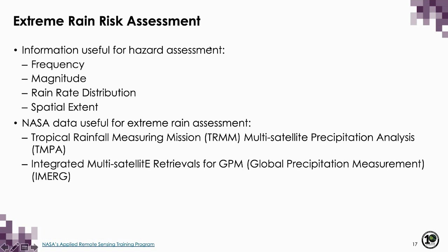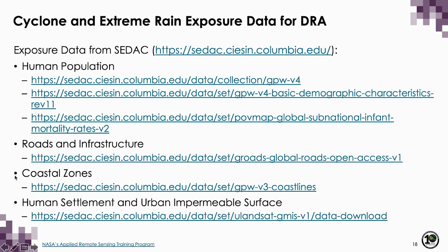The next example will be extreme rain risk assessment using the city of Houston as a case study, which frequently gets flooded because of extreme rainfall or hurricane-related rainfall. Useful information includes frequency of rainfall, intensity, distribution in terms of rain rate per hour or per day, and spatial extent — these can lead to flood risk assessment. We will be using TMPA and IMERG for that. We will also look at exposure data from SEDAC, which includes human population data, roads and infrastructure, coastal zones, human settlement, and urban impermeable surfaces.